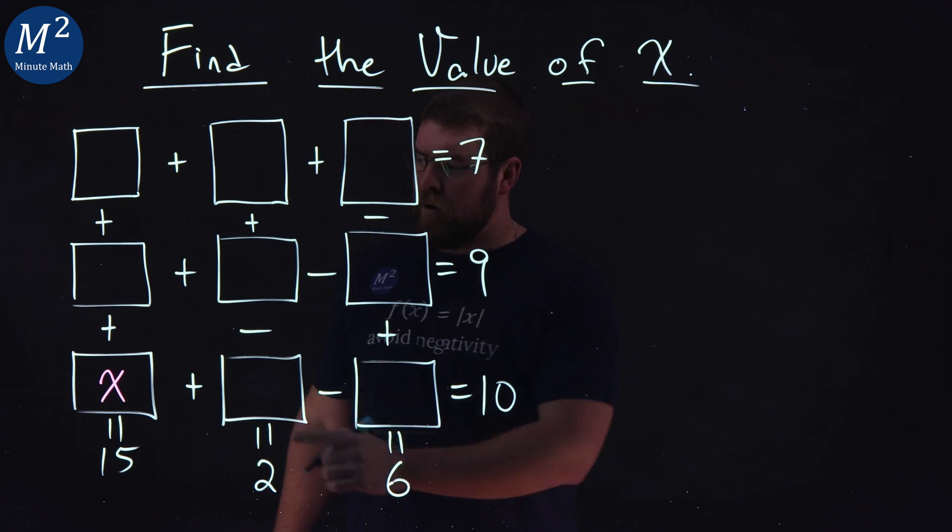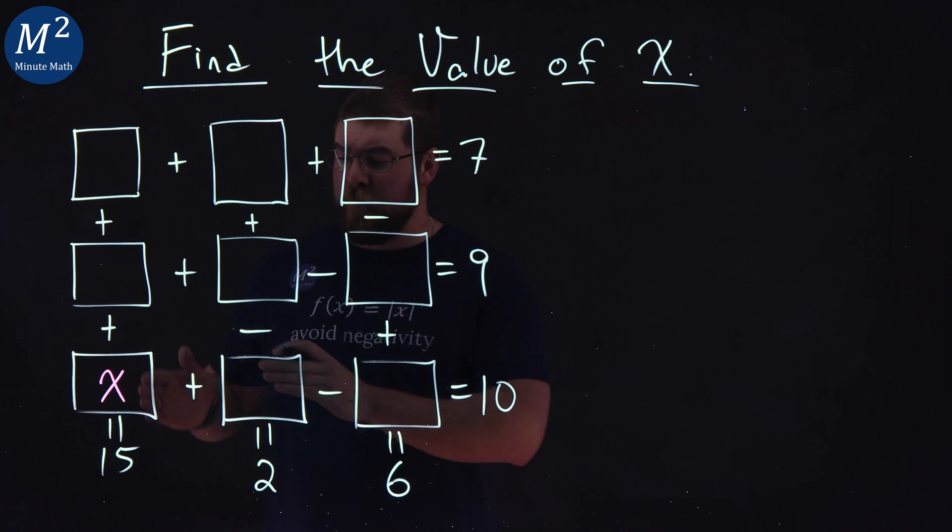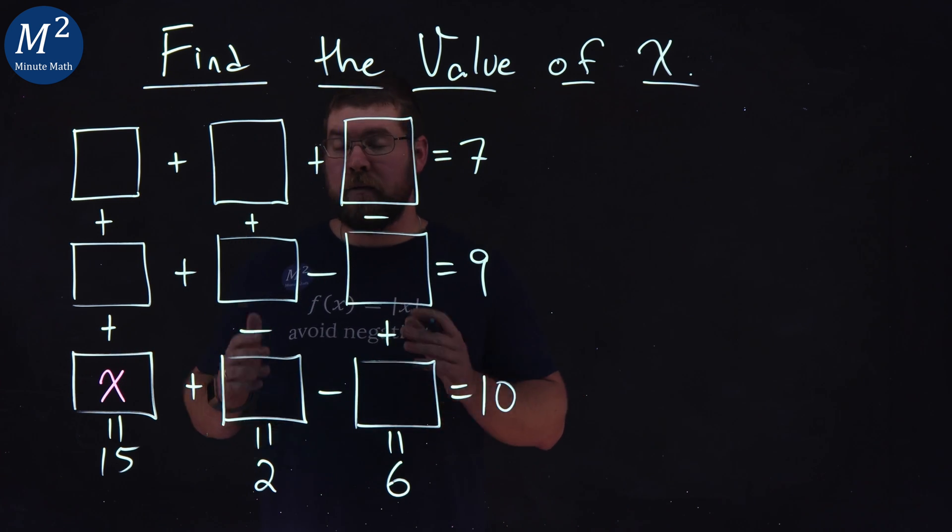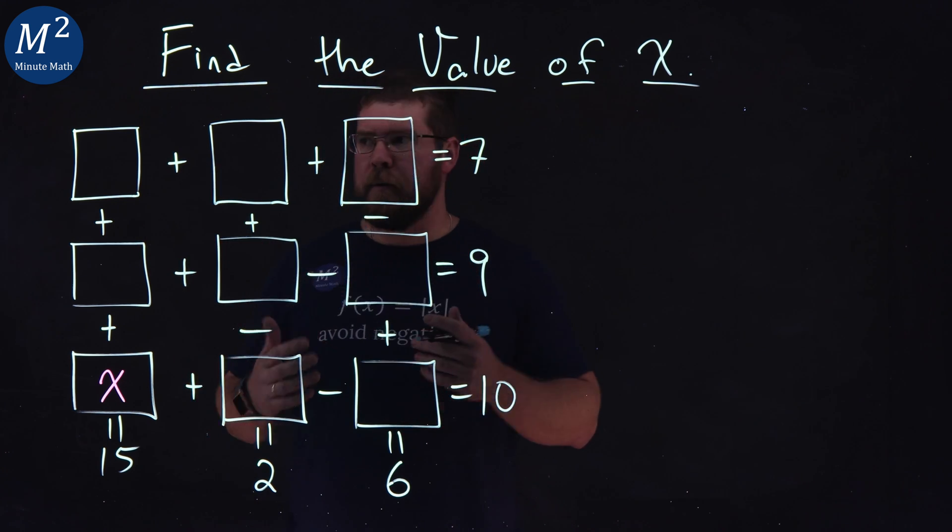One of the boxes, though, is labeled x, and I think that's a good idea. We want to find that x value, but the other ones don't have variables, and math is easier with variables. So let's go give each box a letter.